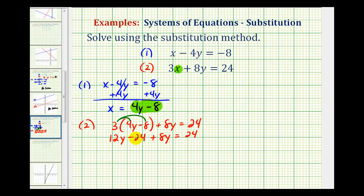Here we have two y terms. Twelve y plus eight y would be twenty y. So we have twenty y minus twenty-four equals twenty-four.